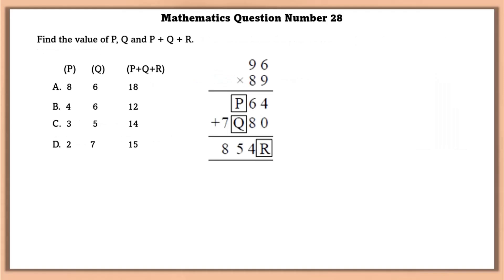Mathematics question number 28. Find the value of PQ and P plus Q plus R. Multiplying 96 into 89, we can get the values of P that is 8, Q that is 6, R that is 4. So adding this, we can get the value that is 18.